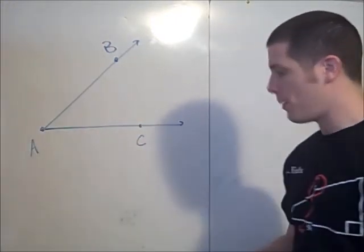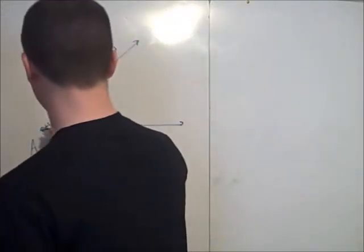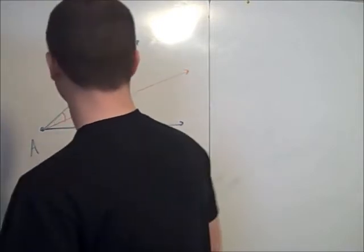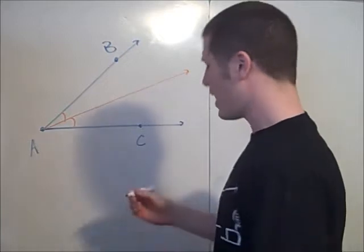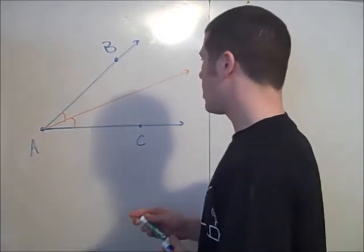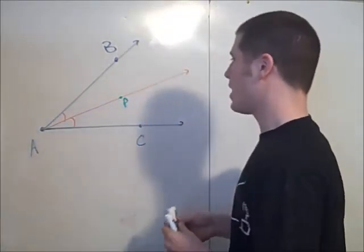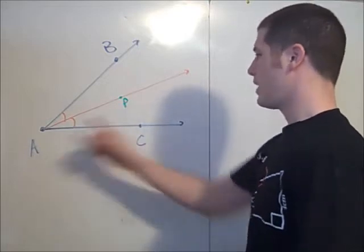First we have angle BAC. Consider its bisector. The angle bisector theorem says that any point on the angle bisector, any point P on this ray, is equidistant from the sides AB and AC.